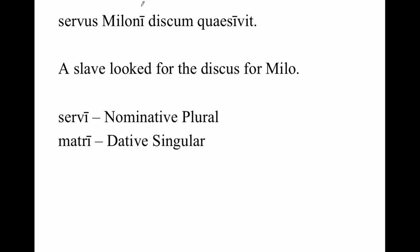Take note of something very important: this long I is the dative singular ending of a third declension noun or name. Mater, matrem, now matri — to or for the mother. However, that same long I on a second declension noun is the nominative plural. What this means: if you encounter a word ending with a long I, you don't yet know if you're looking at a nominative plural or a dative singular. You'll have to look in your dictionary, and your dictionary will tell you which one it is.